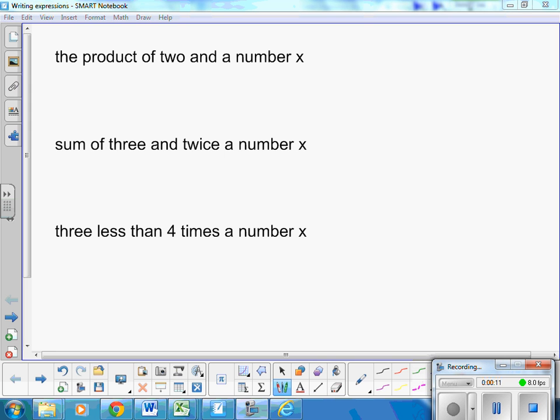The product, product means multiplying, of 2 and a number x. So it's just the product of 2 and x. So it's 2 times x. Now in Khan, you're going to show that as just 2x. Because when a number is next to a letter with nothing between them, it's understood to be multiplied.